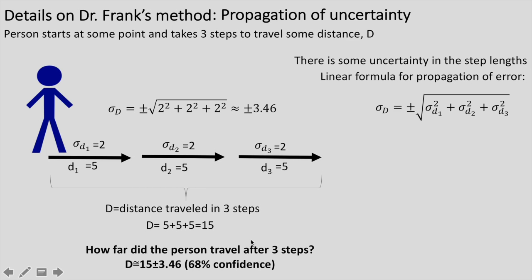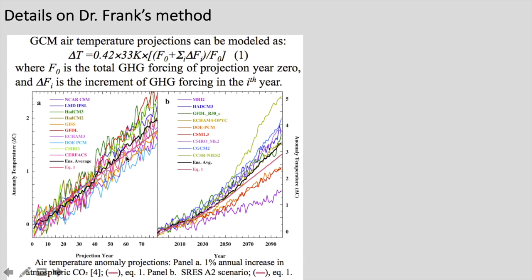This is called propagation of error because you're figuring out the error in something you're not directly measuring — you're measuring the uncertainty in individual components that combine to make your final calculation. The error propagates through the calculation. Dr. Frank's method essentially applies this linear propagation of uncertainty to climate model projections.